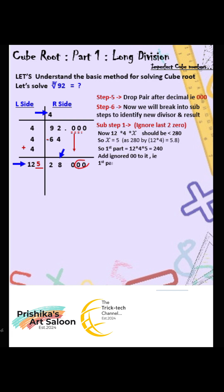Sub step 2: 125 into 5 into 5. Write this 5 in quotient as well. Calculation gives 3,125. It is second part.